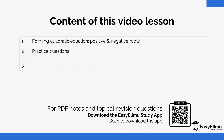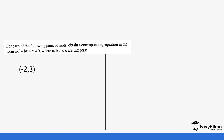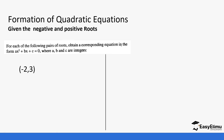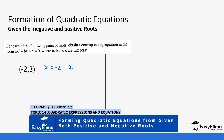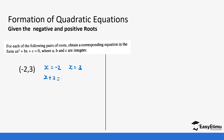This also involves fractions and whole numbers. So let's see how that happens. We have x equals negative two and x equals three. So this is going to be x plus two equals zero and x minus three equals zero.